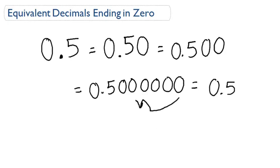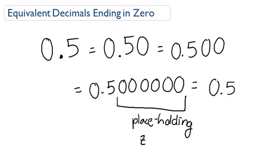These zeros here are called placeholders, or placeholding zeros. They do not change the value. These are all the same number.